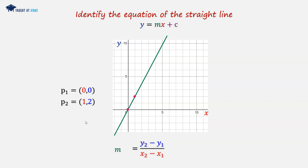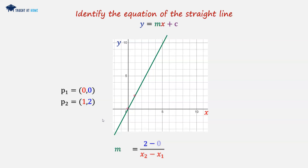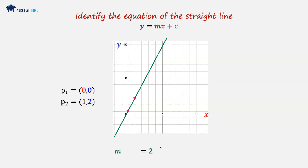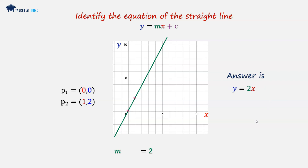So now we have x1, y1, x2, and y2. We go y2 minus y1, which is 2 take away 0, giving us 2. Then the denominator is 1 take away 0, so we have 2 over 1, which equals m. Therefore the gradient m is equal to 2. Substituting into our straight line equation gives y is equal to 2x plus 0. Because the c value is 0, we eliminate it, leaving y equals 2x.